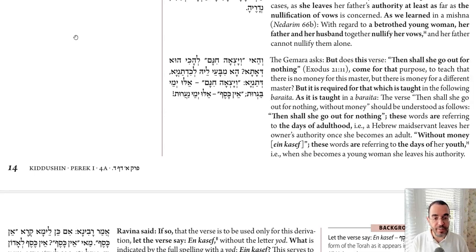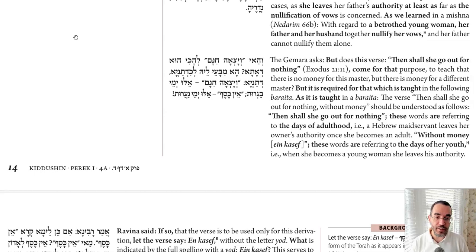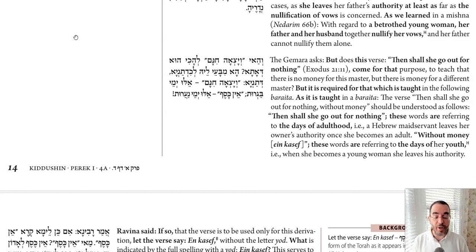Masechet Kiddushin, Daf Dalet. We're learning about the source for Kiddushin Kesef — how do we know that you can effectuate Kiddushin with money? We saw all the way in the beginning on Daf Bet one source: Kicha Kicha, Mi Sedeh Efron, says regarding Kiddushin, Ki Yikach Ish Isha. We're going to come back to that derivation, but on yesterday's Daf we saw another derivation.